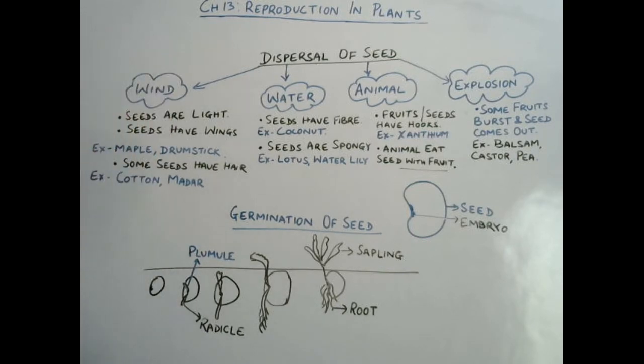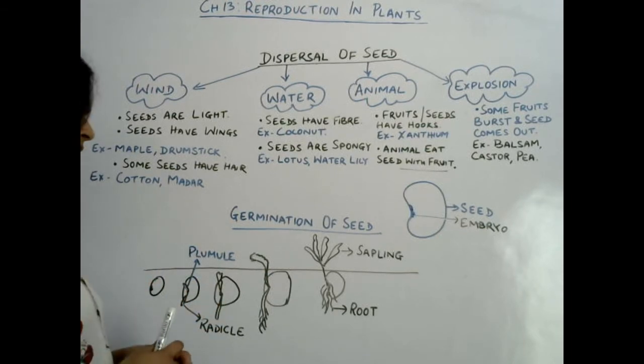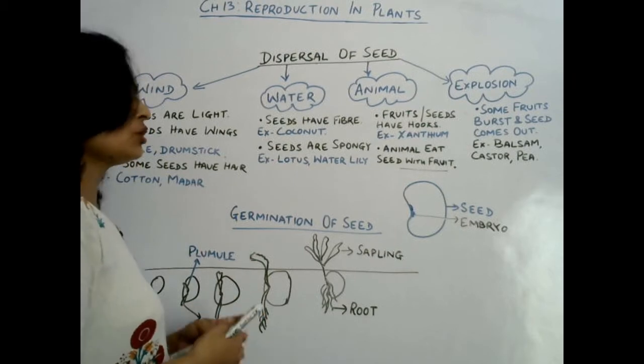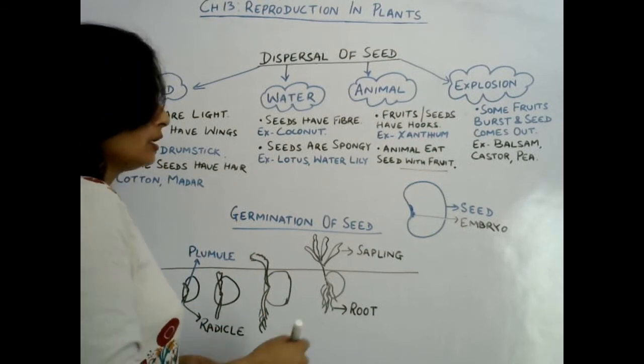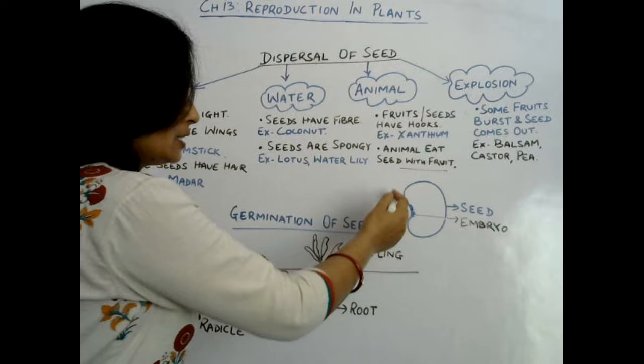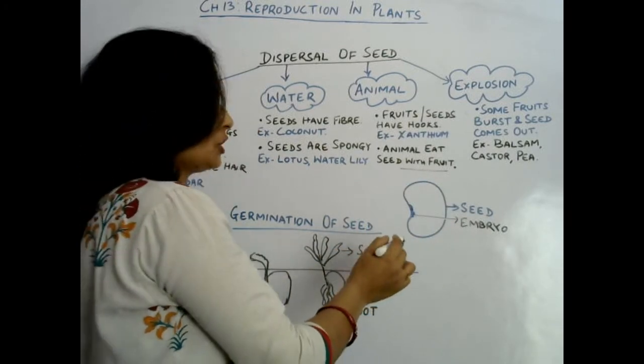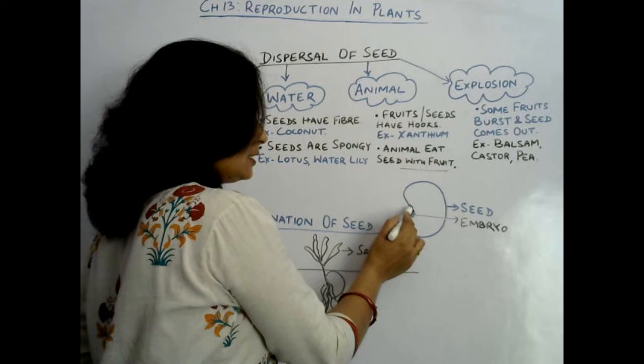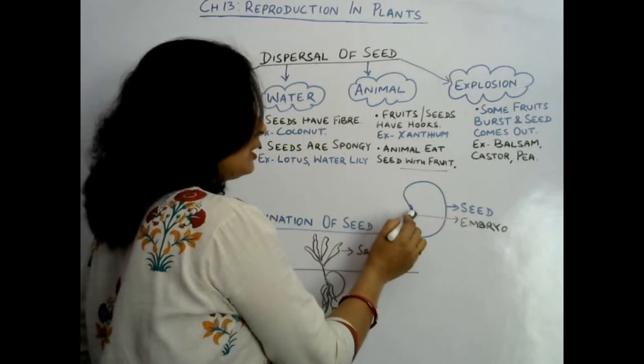Now germination of seed. Once seeds are scattered, then they need to be germinated. So how does germination take place? Look at the diagram of seed. This is seed. The outer cover of seed is called seed coat, and inside the seed there is a tiny structure that is called embryo. Embryo is the future plant.